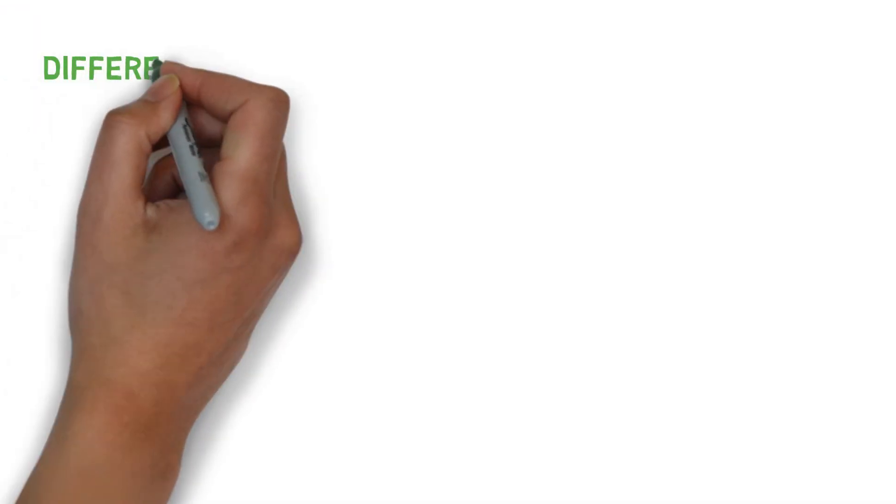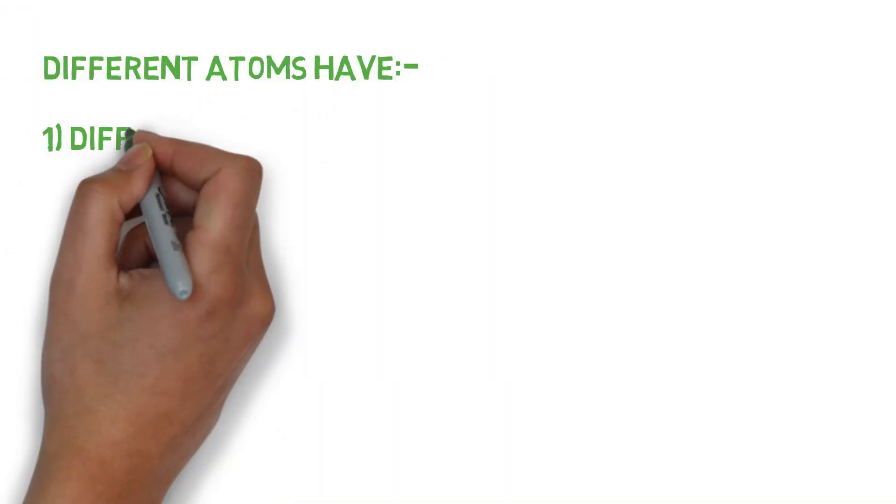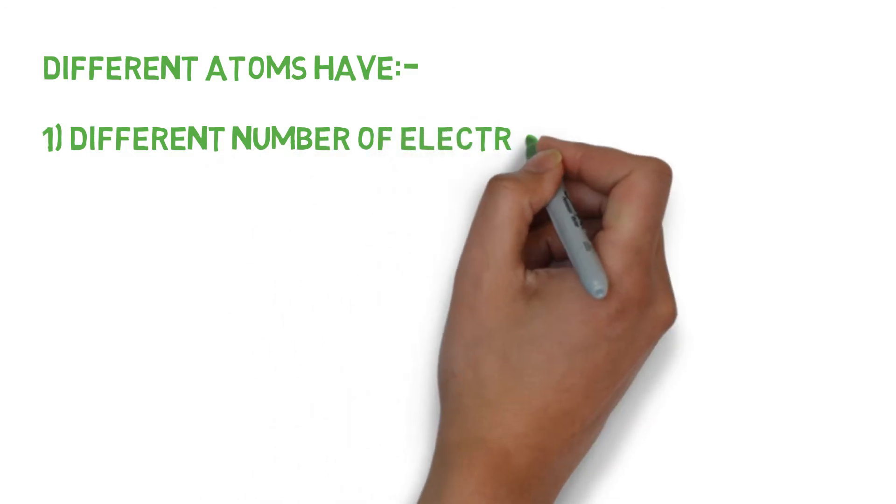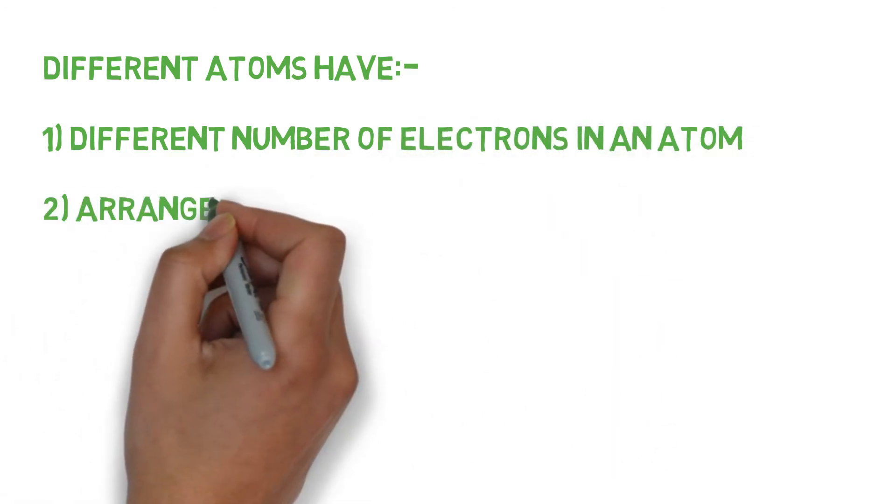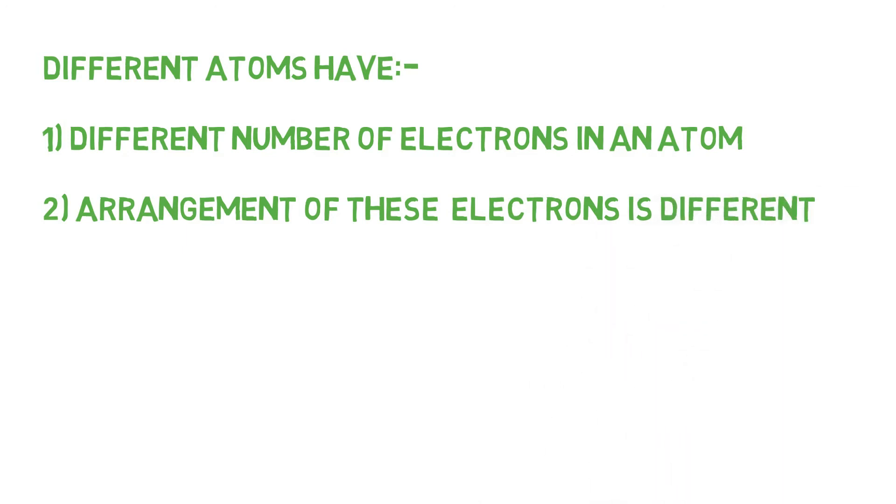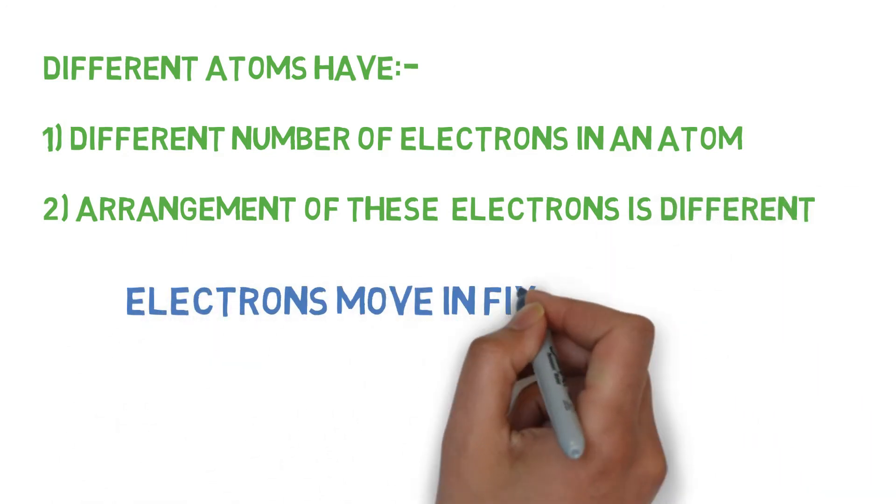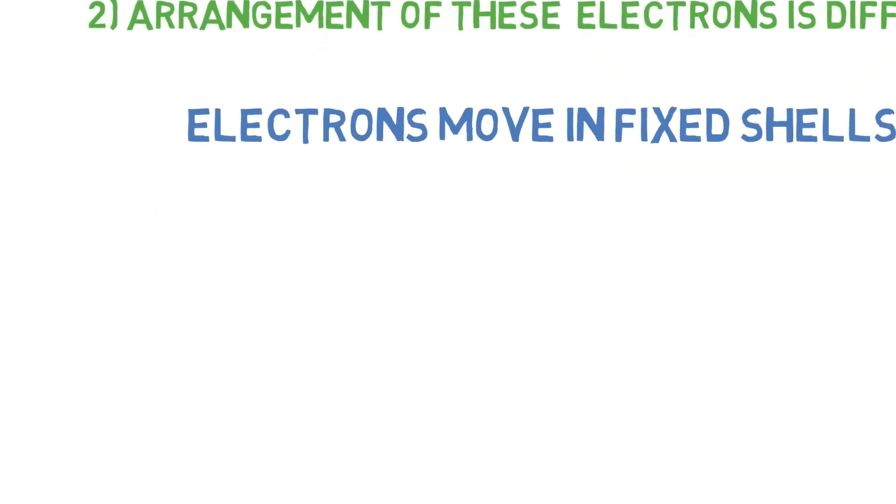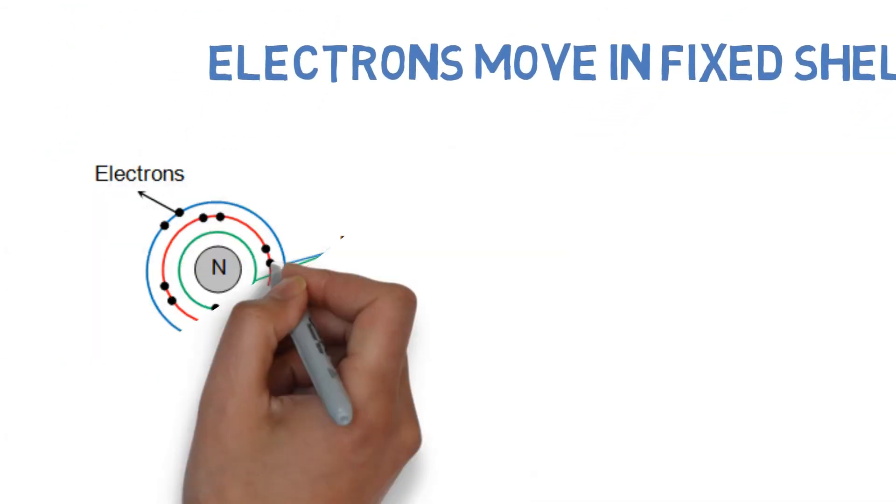The electrons are tiny particles, and different atoms have different number of electrons in an atom, and the arrangement of these electrons in a specific atom is different from the other. The electrons do not move haphazardly inside the atom.